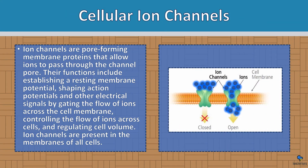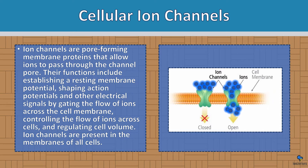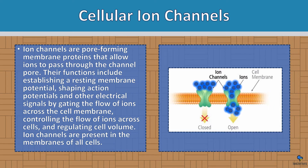Cellular ion channels: ion channels are pore-forming membrane proteins that allow ions to pass through the channel pore. Their functions include establishing a resting membrane potential, shaping action potentials and other electrical signals by gating the flow of ions across the cell membrane, controlling the flow of ions across cells, and regulating cell volume. Ion channels are present in the membranes of all cells — so every cell in your body has an ion channel, and these ions are the same ones we have been discussing.